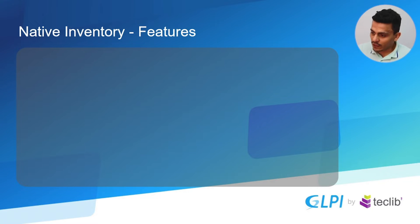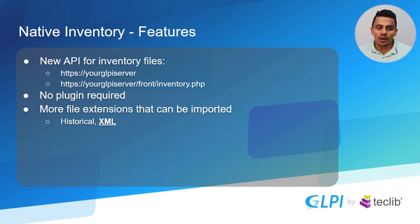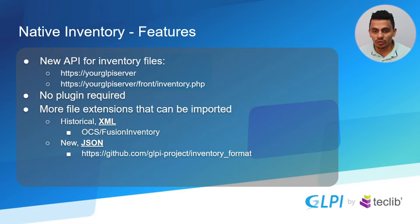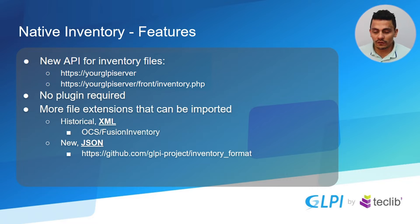Looking at the native inventory features, we have a new API for inventory files — you don't need a plugin and you can import more file extensions. If you were an OCS or Fusion Inventory user, you can still use the XML files and import them to the native GLPI inventory. You don't need the GLPI agent to make the transition. If you don't want to install the new GLPI agents right now, you can still use the Fusion Inventory and OCS Inventory agents and import them. If you don't have access to the network you want to inventory, you can just import the XML or JSON files.